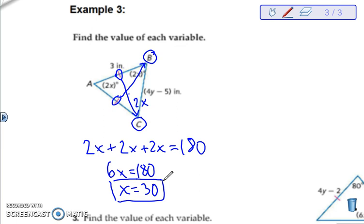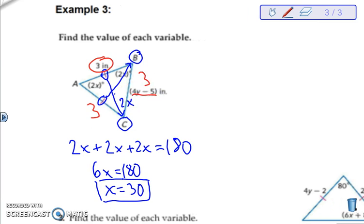There we go. If all the angles are the same it means all the sides are the same. So if we have a 3 over here we need a 3 over here and a 3 over here. I look at my formula. I see 4Y minus 5 is where the 3 is supposed to go, so that tells me that 4Y minus 5 has to equal 3. Now we can solve it out and get the Y.